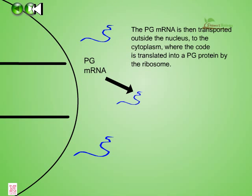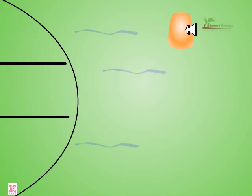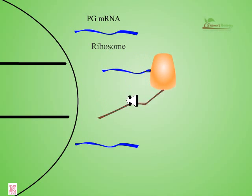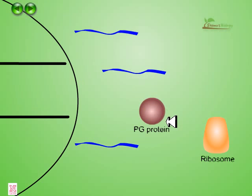The PG mRNA is then transported outside the nucleus to the cytoplasm, where the code is translated into the PG protein by the ribosome. This is the ribosome. This mRNA will be translated to the desired proteins, which are the polygalacturonase — these are the PG proteins.